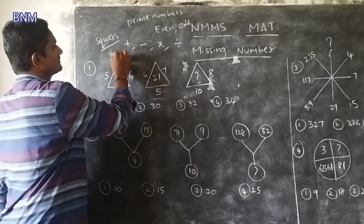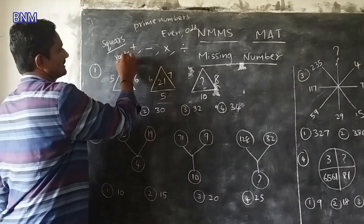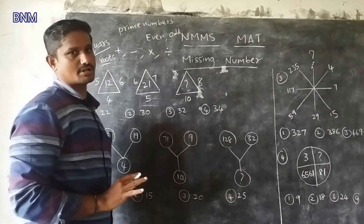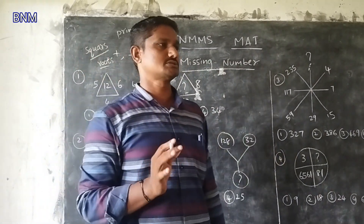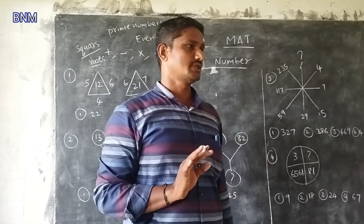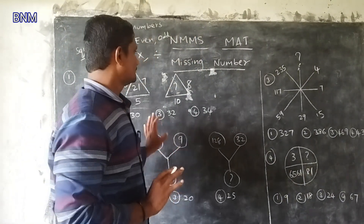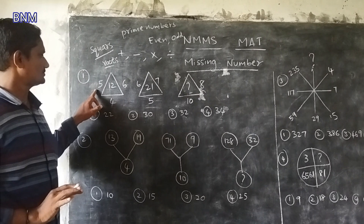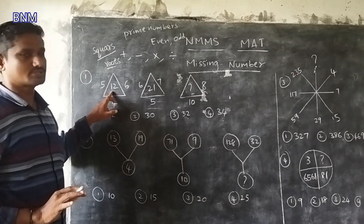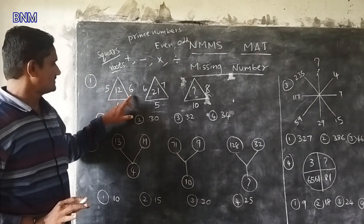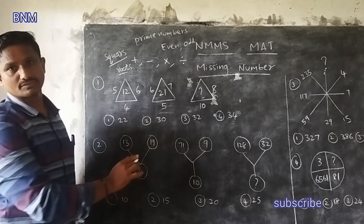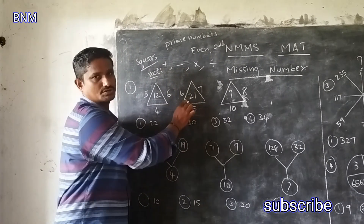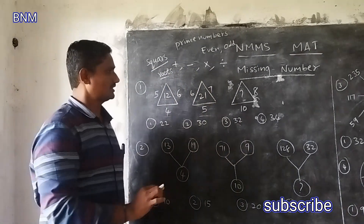If we can find this missing number, we will do the missing number. First, we will show you the number: 5, 6, 4, 6, 7, 5, 6, 21.